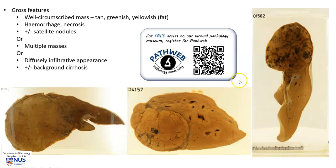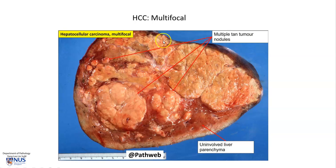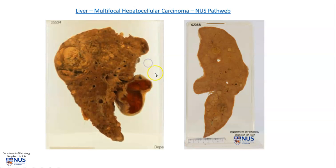All these virtual pathology specimens are taken from our free online pathology resource PathWeb. You can scan this QR code to register, or the registration link is also found in the video description. Here is an example of hepatocellular carcinoma with this fleshy tumor arising on a background of cirrhosis. Here is an example of a multifocal HCC with multiple tumor masses, and in this case the liver does not show any background cirrhosis. And here are some other examples of multifocal hepatocellular carcinoma, in this instance also occurring on a background of cirrhosis.